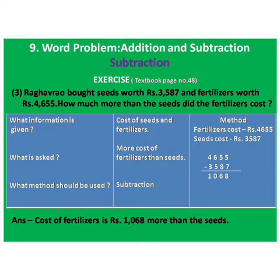Number 3. Raghav Rao bought seeds worth Rs. 3,587 and fertilizers worth Rs. 4,655. How much more than the seeds did the fertilizers cost? Ka ii sangit le la hai baga? Raghav Rao ni seeds 3,587 la aani fertilizers Rs. 4,655 la aani le la ahit. How much more than the seeds did the fertilizers cost?